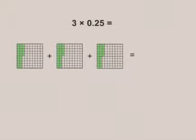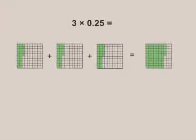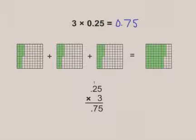10 by 10 grid paper is another great model that can be used to represent and solve decimal multiplication problems. For example, have students use grid paper to model and solve 3 times 25 hundredths. Once students are comfortable working with models to represent and solve decimal by whole number multiplication, you can introduce the algorithm.